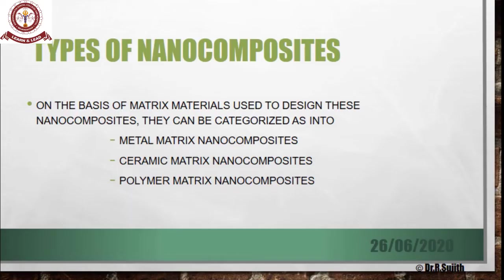Coming to the types of nanocomposites, this classification is based on modification of the resin matrix. The resin matrix normally used is BisGMA, TEGDMA, UDMA. Initially they modified the filler particles; now they are modifying the resin matrix as well — incorporating nanofillers like metal matrix nanocomposites where metal oxides are added to the resin matrix, or ceramic matrix nanocomposites with ceramic fibers, or polymeric materials added to the nanocomposites. These are in development and will be available in the market.